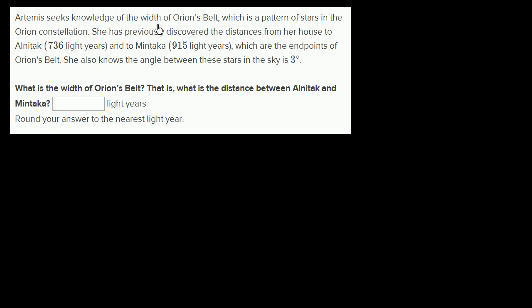Artemis seeks knowledge of the width of Orion's Belt, which is a pattern of stars in the Orion constellation. She has previously discovered the distances from her house to Alnitak, 736 light years, and to Mintaka, 915 light years, which are the endpoints of Orion's Belt. She also knows the angle between these stars in the sky is 3 degrees.